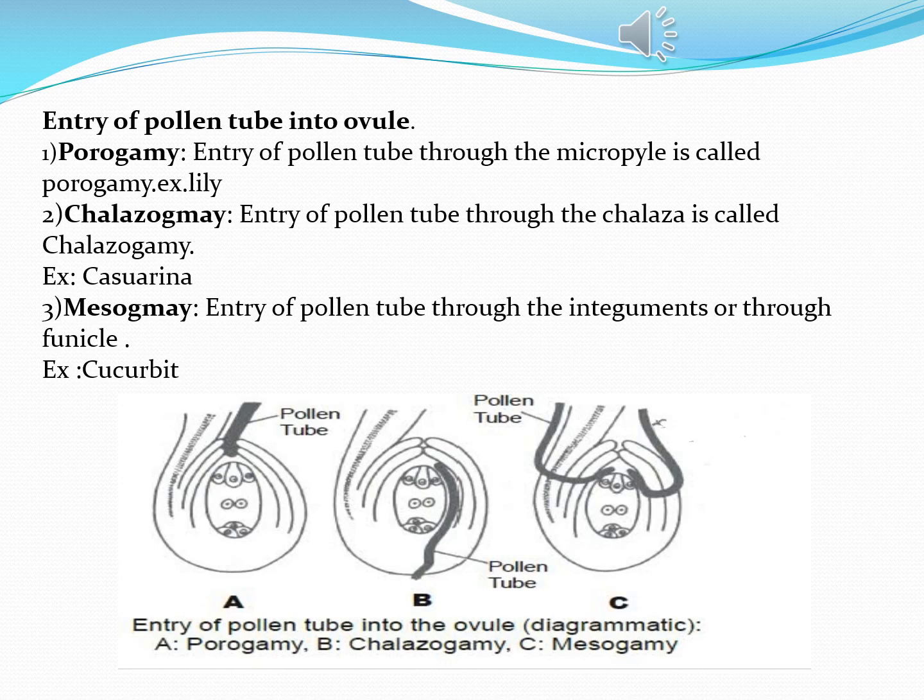Hello guys, welcome to session 7. Last session we discussed about cross pollination by biotic agents. Today we will discuss about pollen-pistil interactions. In pollen-pistil interactions, we know that pollen tubes will be produced, and these pollen tubes will enter into the pistil and reach the ovule.